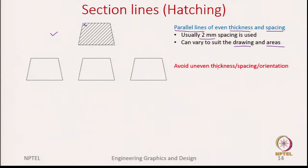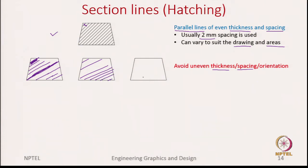To illustrate, let us look at some common mistakes people make. First, we need to avoid uneven thickness - you cannot have one very thick line while others are thin. Second, avoid uneven spacing - you cannot have large spacing initially and then come to narrow spacing. The spacing needs to be uniform. And lastly, consider orientation - all these lines should be parallel. You cannot have lines going in one direction and then change the orientation partway through. All these are wrong.